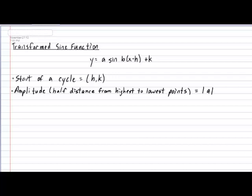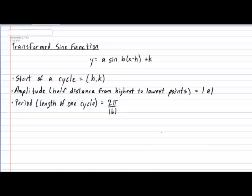The next element of the sine function we can easily identify is its period. The period is defined as the length of one cycle, and it can be calculated with the formula 2 pi divided by the absolute value of b.